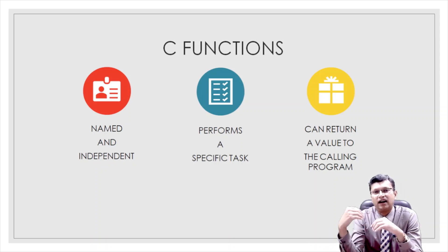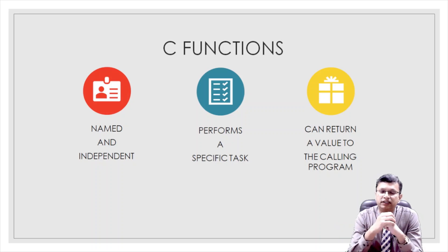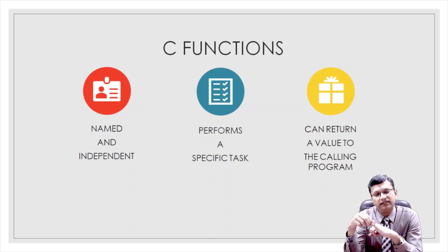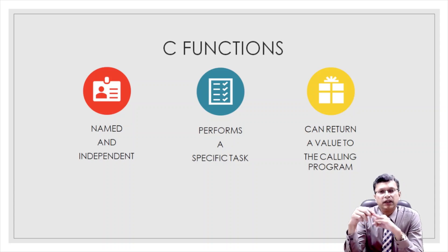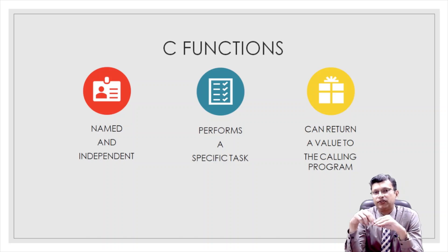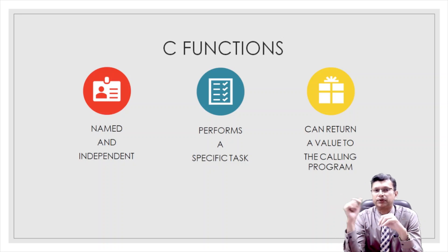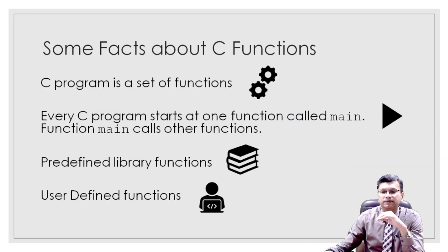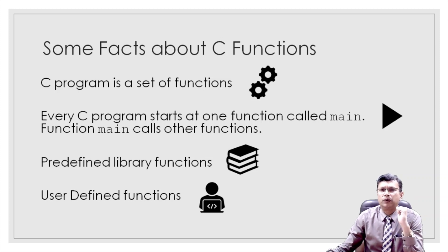C functions can be understood with a few key facts: number one, all functions have a name and are independent; number two, a function performs a specific task; number three, it can return a value to the calling program.